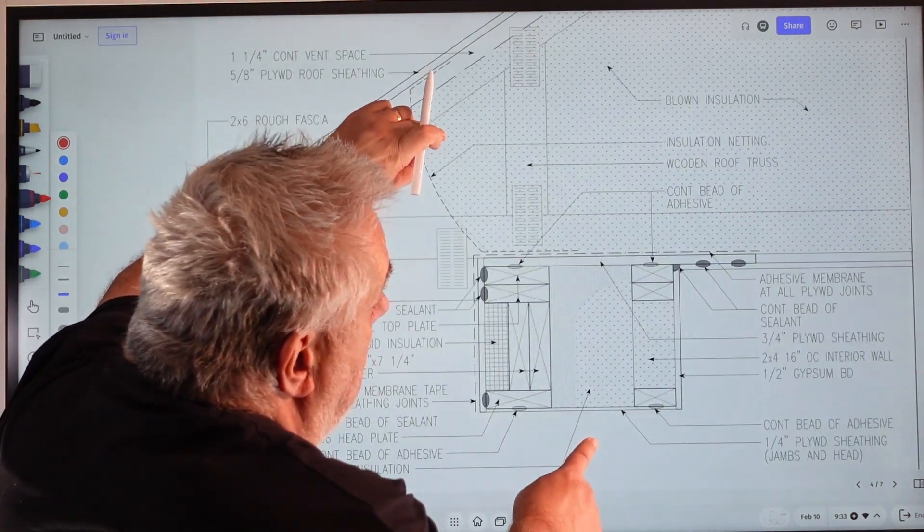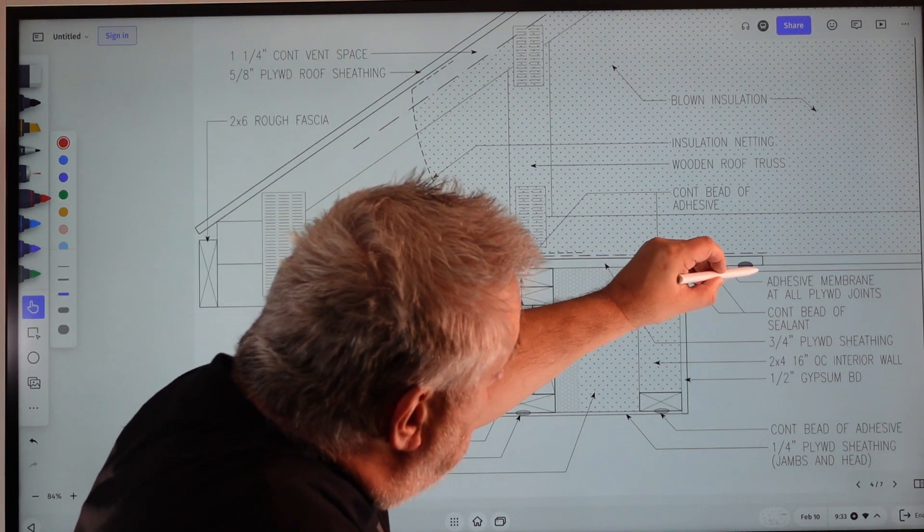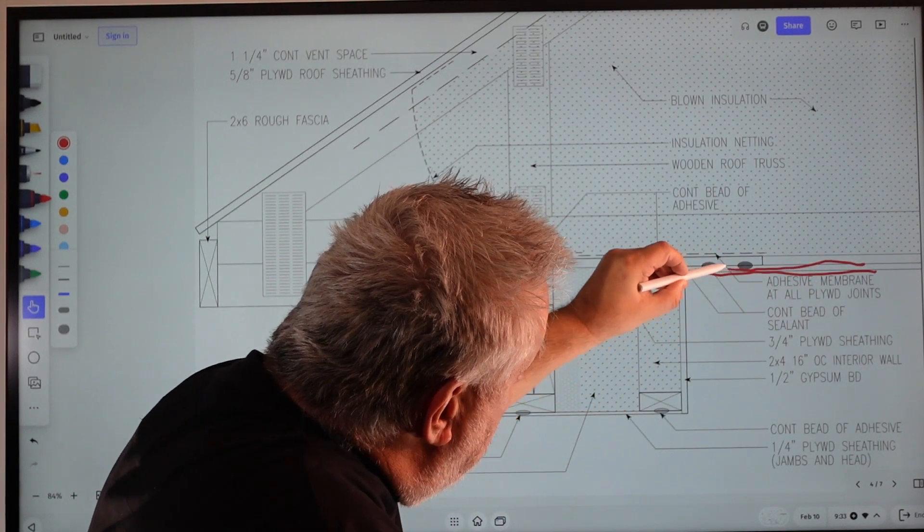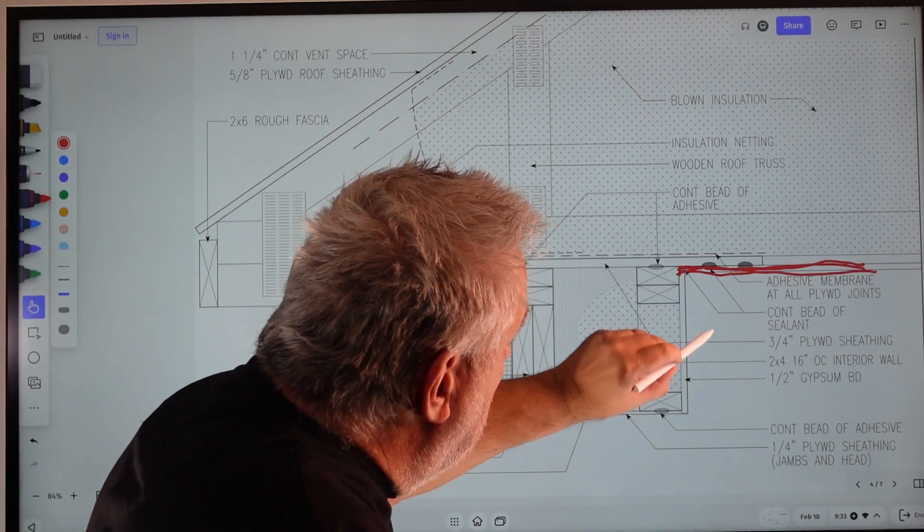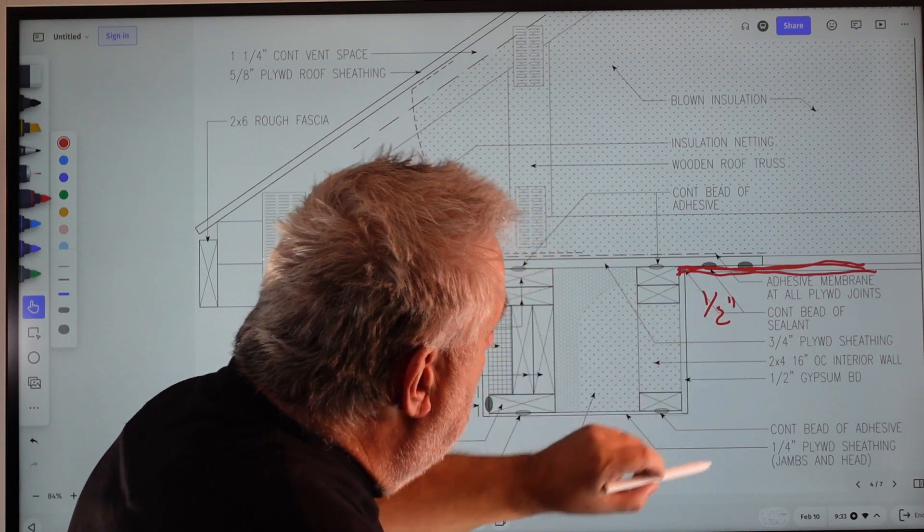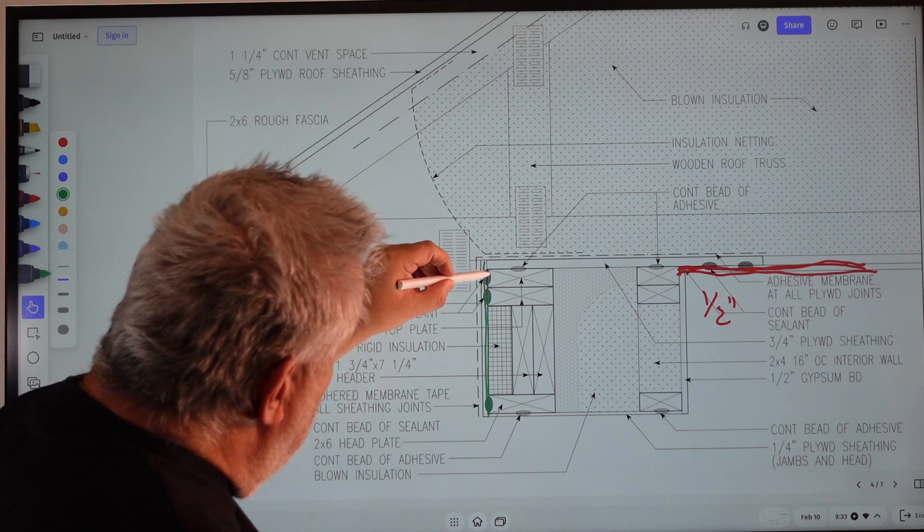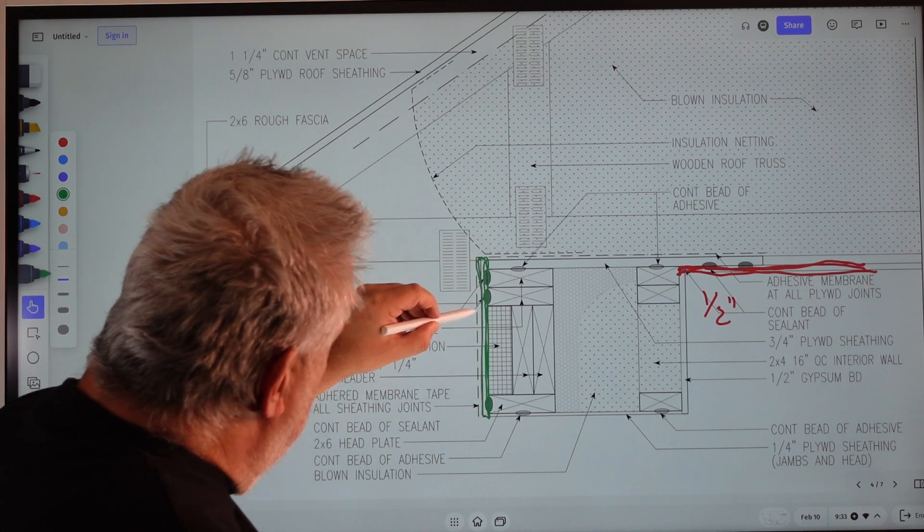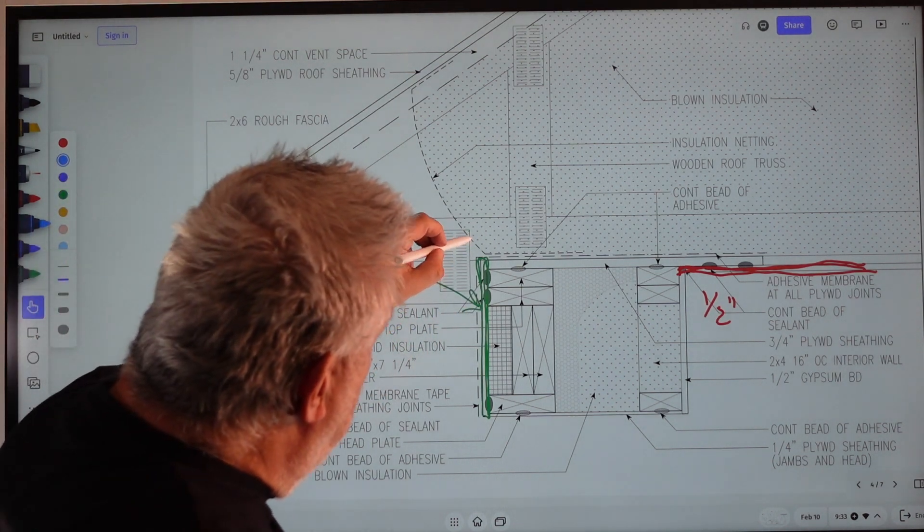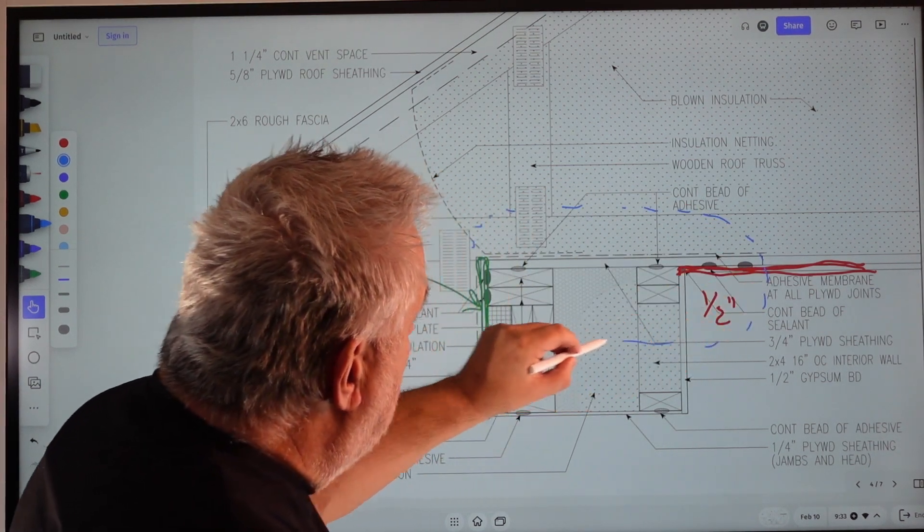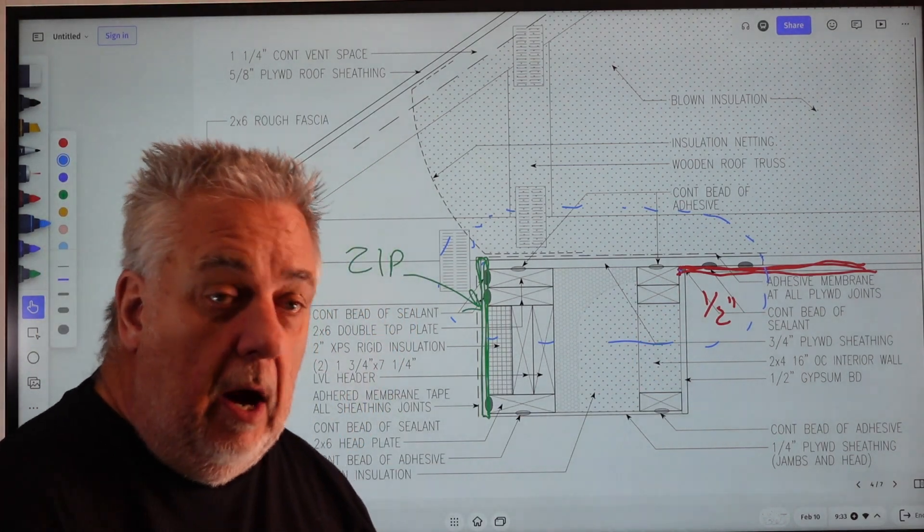I'm going to blow this up here to a nice big size. Here is our drywall. We know we've got to connect that there, and that's just basically half inch gypsum board. And then we know on the outside here, we have our zip. Now, the question becomes, how do I connect this to that?